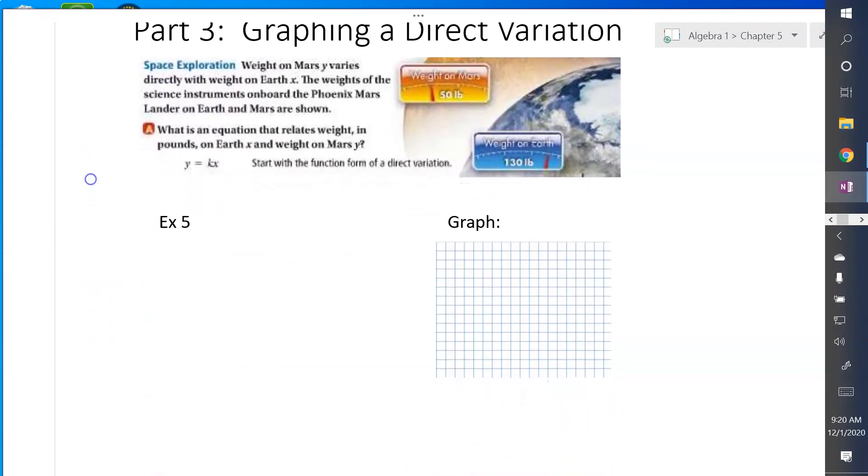Now we're going to start graphing these. And as you may remember, I do have a background from NASA, so of course I have to grab a space problem. So what this is telling us is that weight on Mars varies directly with weight on Earth, which is x. Y is the weight on Mars, and then x is your weight on Earth. And then what they did is they sent the Phoenix Mars lander to Mars, and they actually had it measure weight on Mars. And it already had the weight on Earth. And on Earth, it measured 130 pounds, but on Mars, it measured 50 pounds.